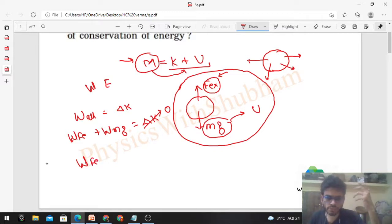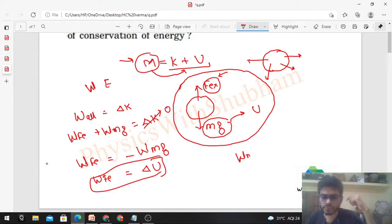The change in kinetic energy is zero. Then work done by F external - you can see an interesting result here - work done by F external is equal to minus work done by mg, which is equal to change in potential energy. So that is the work done by external force.